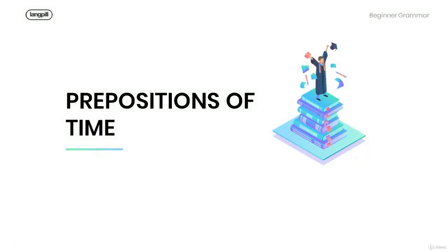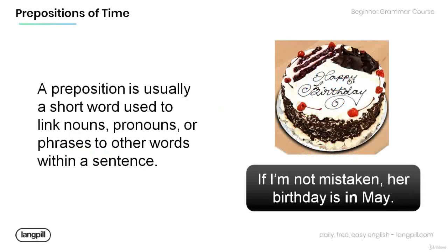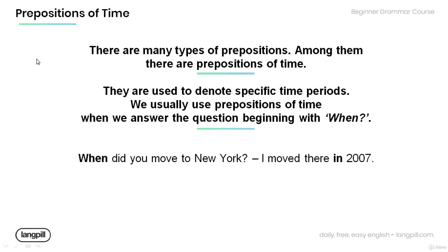Welcome to this tutorial. Today we're going to talk about prepositions of time. Let's get started. Remember that a preposition is usually a short word used to link nouns, pronouns, or phrases to other words within a sentence. Have a look at the example: if I'm not mistaken, her birthday is in May. Note that the preposition 'in' is used to link the noun 'May' to 'birthday.'